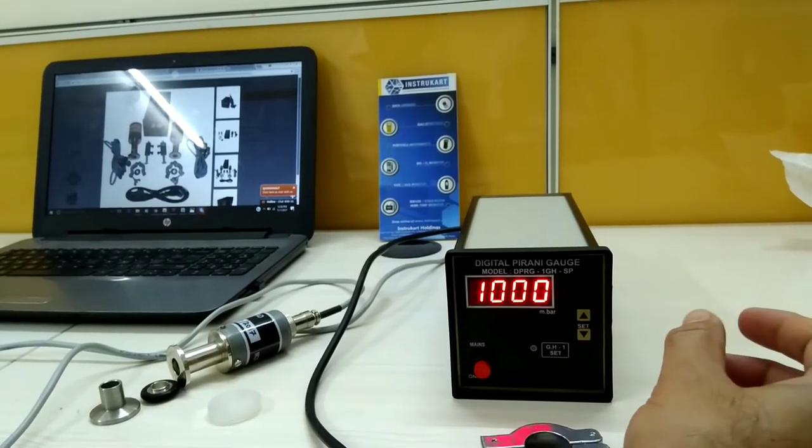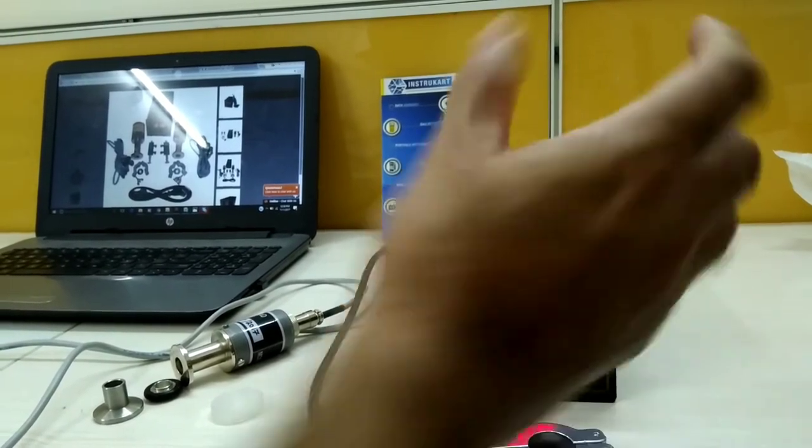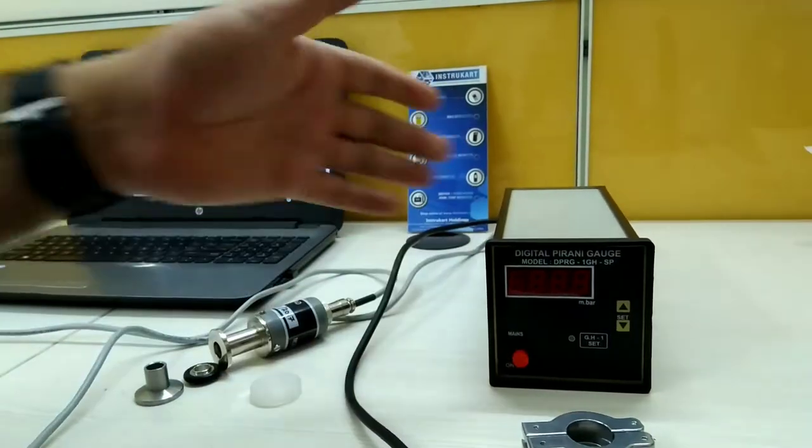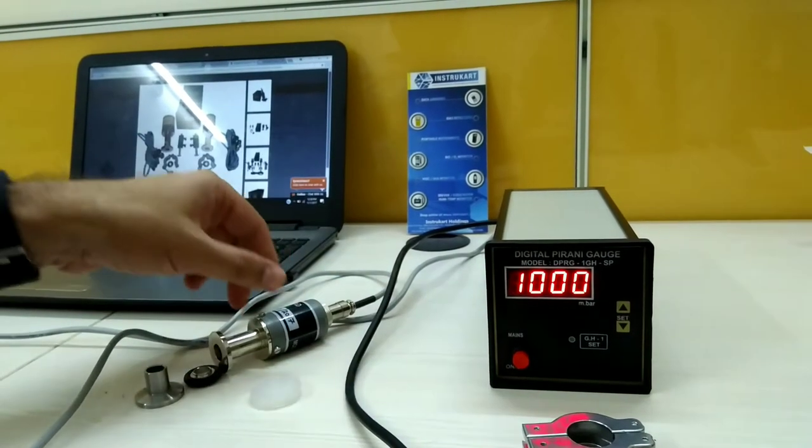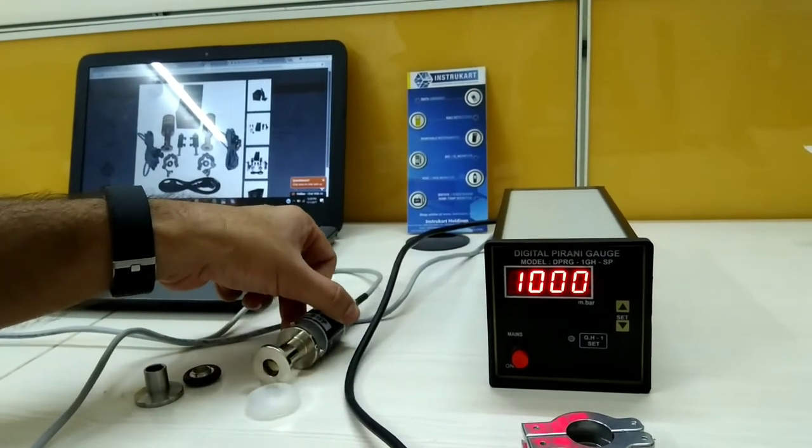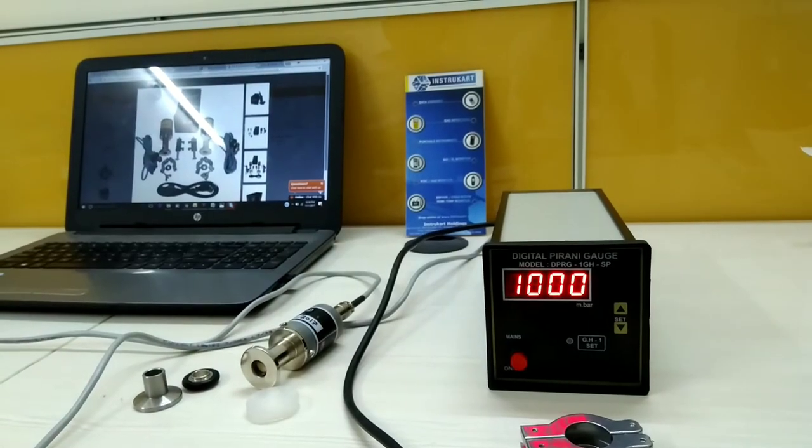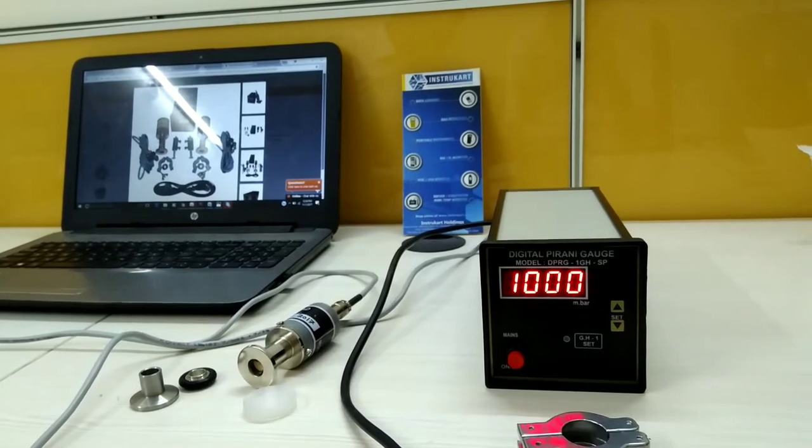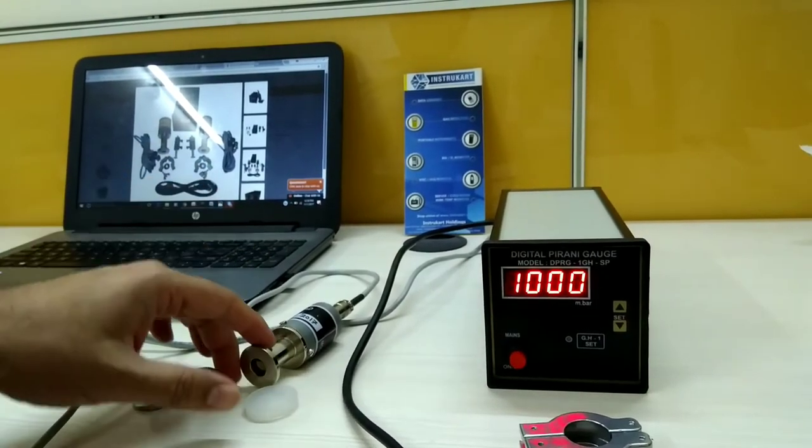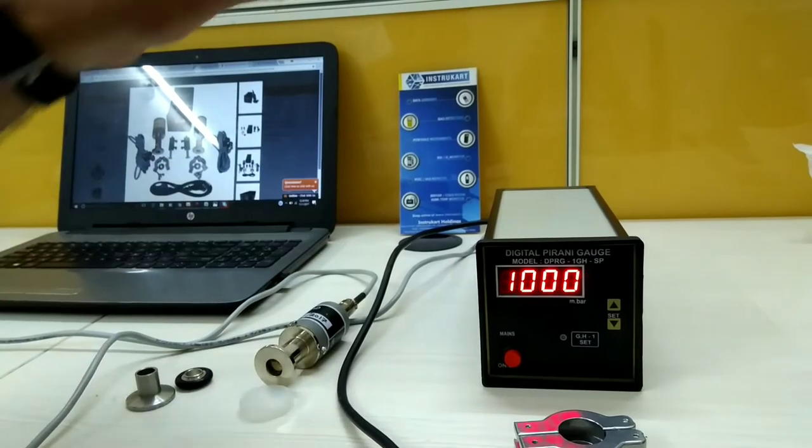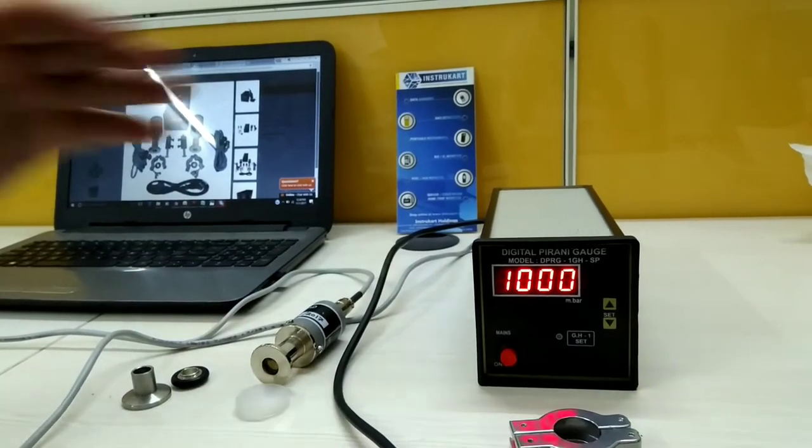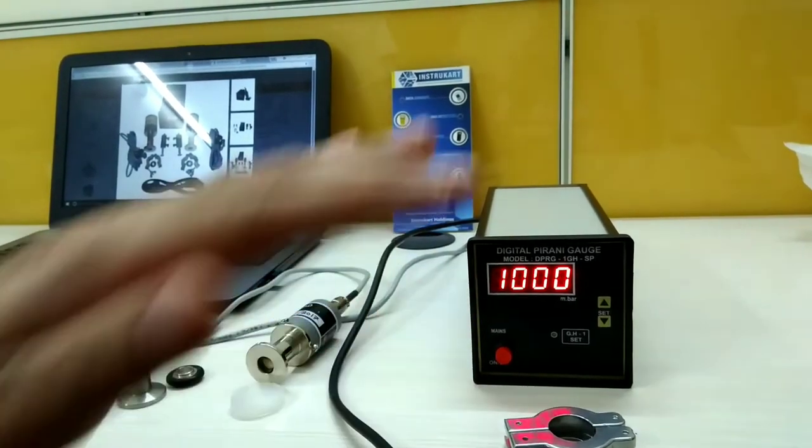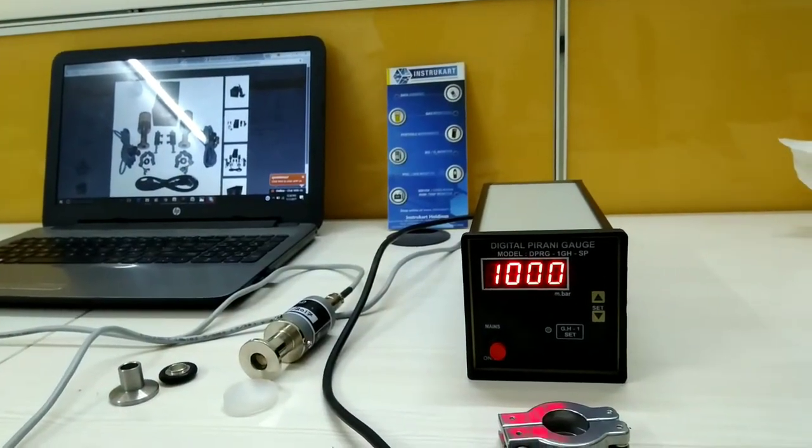It's a simple operation when I'm switching on the instrument for the very first time. I press the mains button and it switches on. This is the atmospheric or barometric pressure, it always indicates 1000 millibar in open condition. As we start vacuumizing the system where the Pirani Gauge Head is fitted, the reading goes down right up till 0.001 millibar, that is 10 to the power minus 3 millibar.